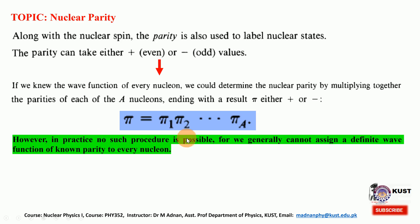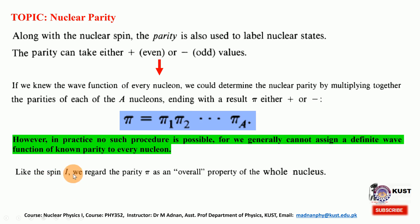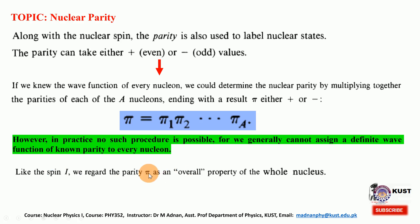In practice, we generally cannot assign a definite wave function of known parity to every nucleon. Like the spin i — which is the intrinsic angular momentum — we regard the parity pi as an overall property of the whole nucleus. That is, instead of talking about individual nucleons, we talk about the parity of the overall nucleus, generally saying that this nucleus is having spin 0, spin 1, or spin 2.